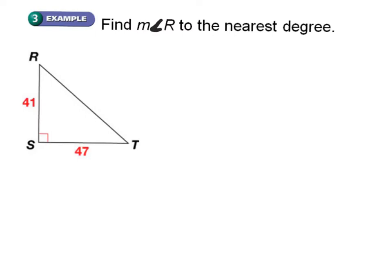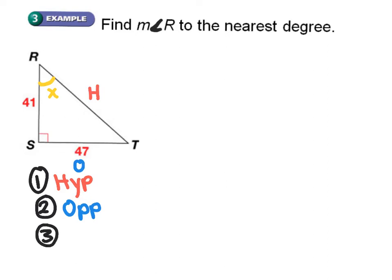If I want to solve a full problem like this, if it asks for the measure of angle R, we are solving for this angle R so I'm going to mark the R and call this x. The first thing we want to do is label all the sides. I have my hypotenuse, the opposite side which is 47, and the adjacent side which would be 41.